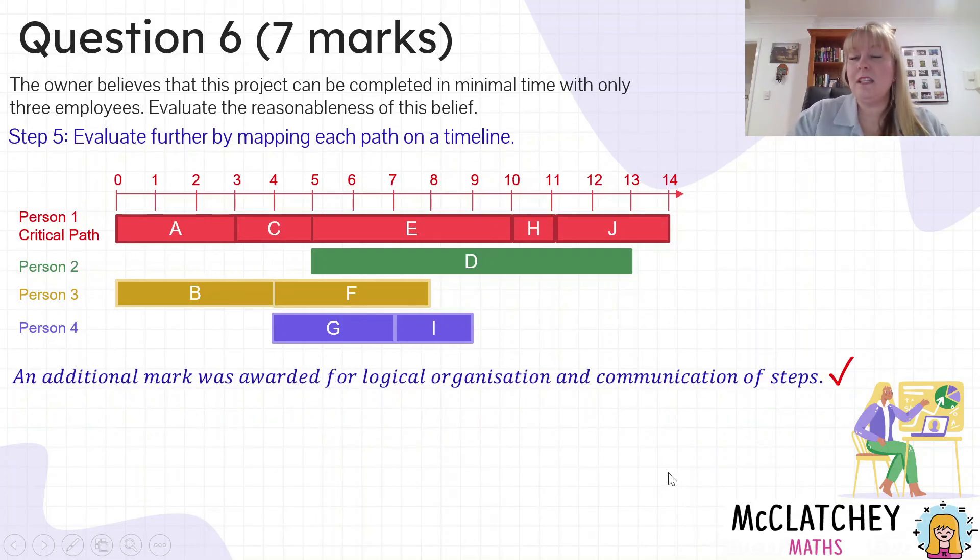There was also an additional mark provided in this question for showing some logical organization and communication of steps. This is where it's really important that your activity network is done quite neatly and that it's legible to see what you've done with your forward scanning and your backwards scanning. I see a lot of students making an absolute mess of those. So this is where the communication is critical and you get your next mark.